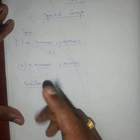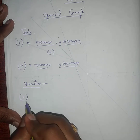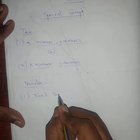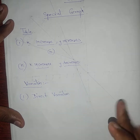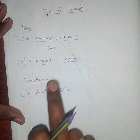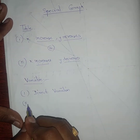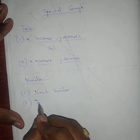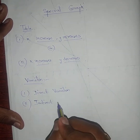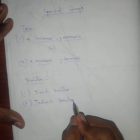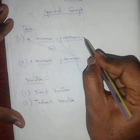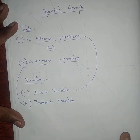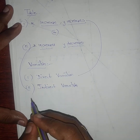After the table we need to see the variation. If x increases and y increases, it is called direct variation. If x increases and y decreases, it is called indirect variation.